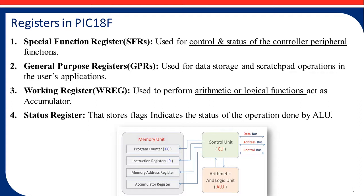Next is the working register, that is the W register. This register is generally used to perform all arithmetic or logical functions and works as an accumulator. The next register is the status register. The status register is generally used to store the flags, and they always store information in either 0 or 1 format — meaning they show the status whether it is high or low. These status operations are done by the ALU.